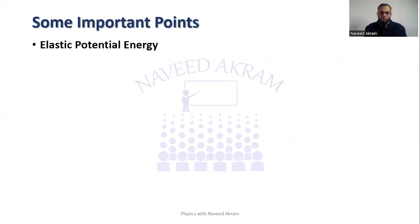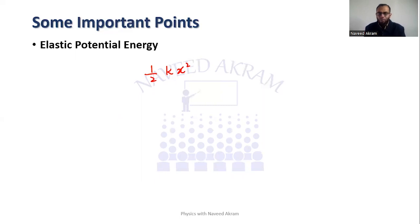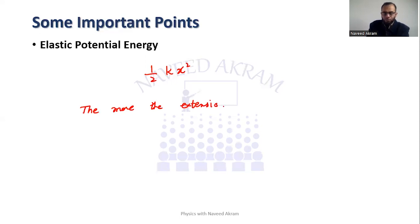Elastic potential energy was studied in the previous chapter. When you stretch or compress a spring, energy is stored in it, known as elastic potential energy. The formula is one-half times k times x squared — one half into spring constant into the square of extension. The key point is that elastic potential energy depends on the extension: the more the extension, the more the elastic potential energy stored in the spring.